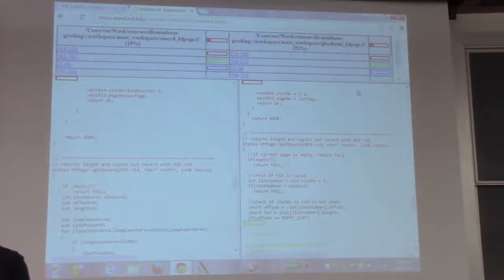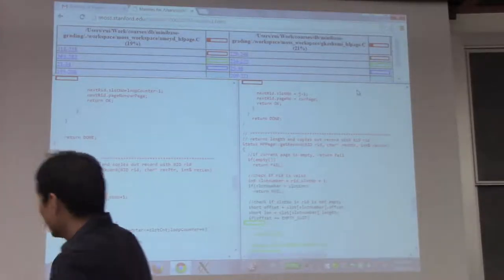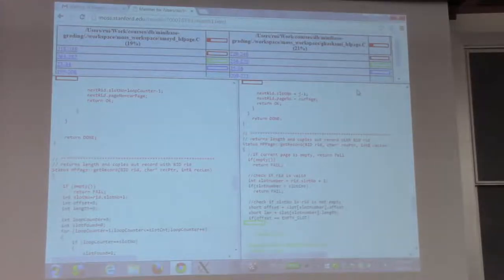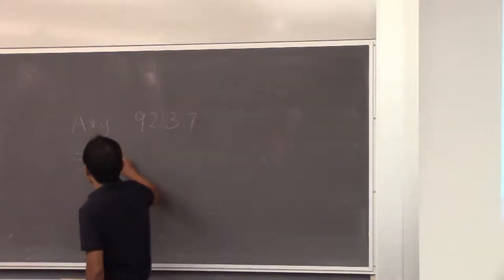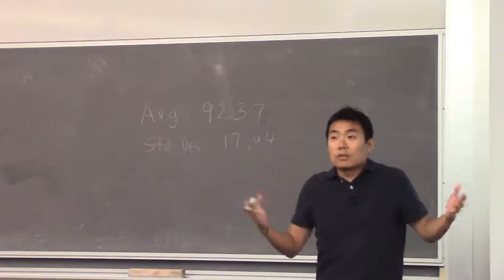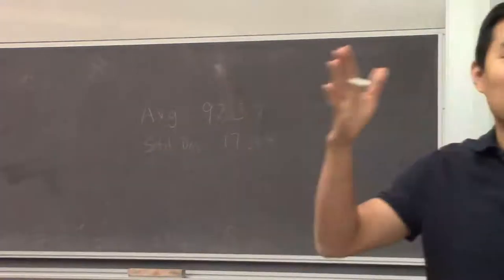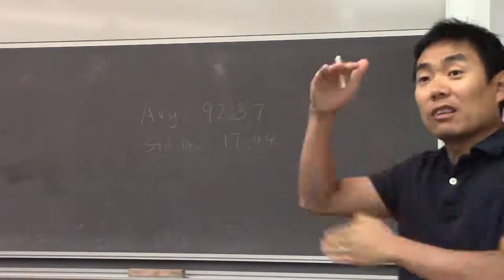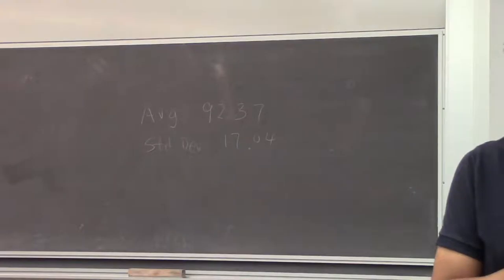So now, the average is 92.37 and the standard deviation is 17.04. Standard deviation means, if you view this kind of like a Gaussian curve, the average plus or minus this covers about 95% of the population from this class.